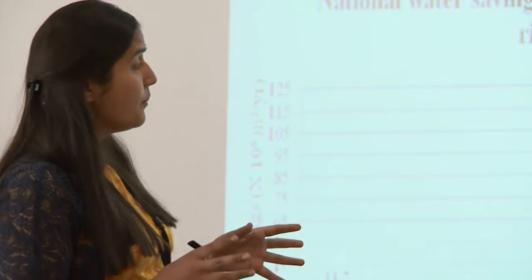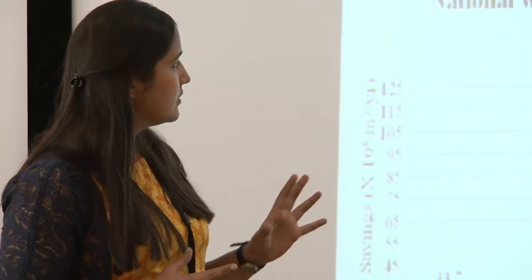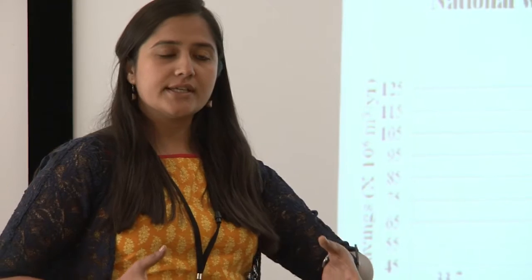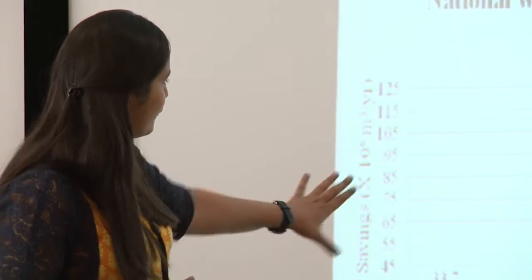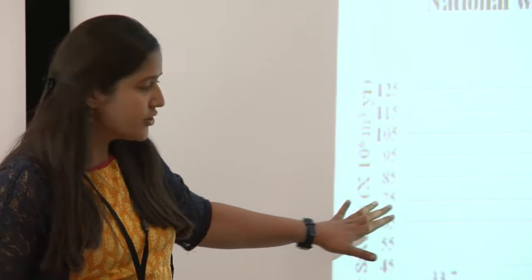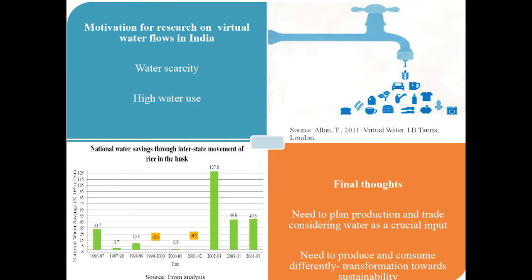I tried to assess based on the water footprint data which comes from an organization called UNESCO IHE, and I tried to assess whether we are saving water in India or not. Since I'm in my advanced stage of PhD, I have some analysis here. If you see the green bars, they show that there is a lot of water saving by interstate movement of PADI in India. But there are two years where there has been a water loss.